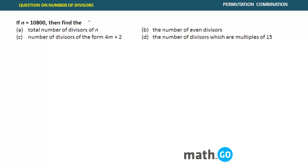Now, let us apply the concept of total selections of identical items in number of divisors of a particular number — a very important category of questions. So for example, the number is 10800. You need to find — these are four questions A, B, C, D — where N is 10800 and you need to find the number of divisors of N. So the first thing you have to do is prime factorization.